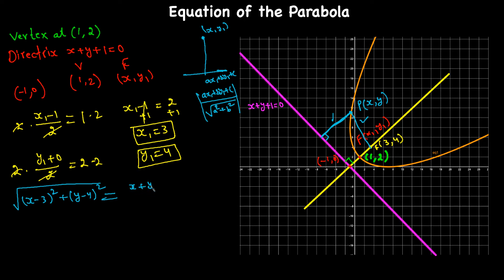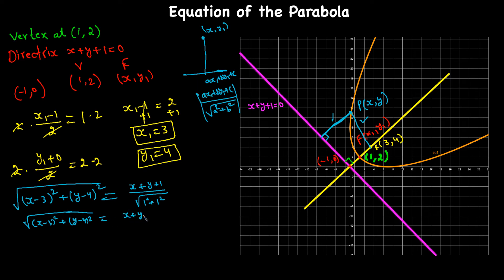Setting the two distances equal: √((x-3)² + (y-4)²) = |x + y + 1| / √2. Squaring both sides gives (x-3)² + (y-4)² = (x + y + 1)² / 2. Multiplying both sides by 2: 2[(x-3)² + (y-4)²] = (x + y + 1)².